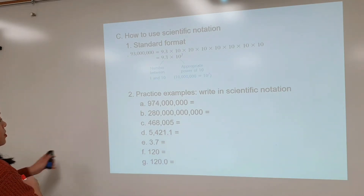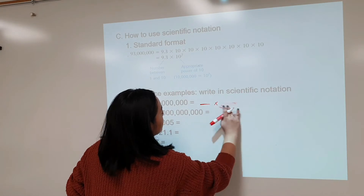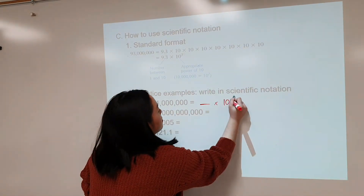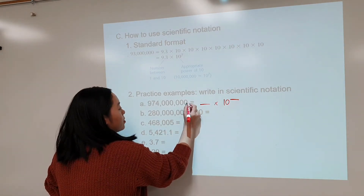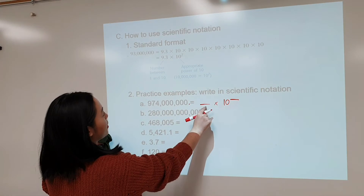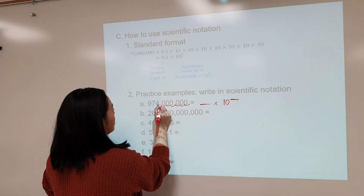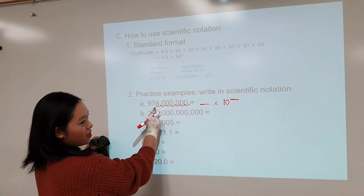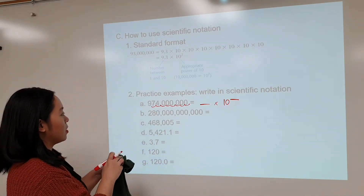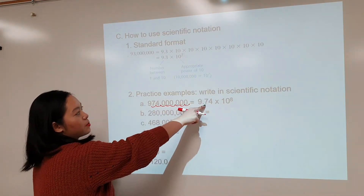Let's do example A. Remember there are two parts to scientific notation — the second part is always some power of 10. We place an invisible decimal at the end and move it until we get a number between 1 and 10. Moving it 7 places gives us 97.4 — that's not between 1 and 10 — so one more place gives us 9.74. So the answer is 9.74 times 10 to the 8th, because we moved 8 places.